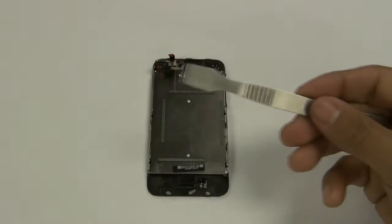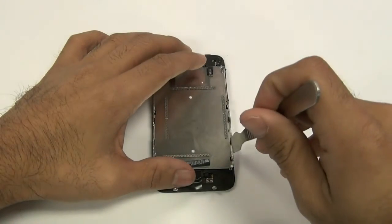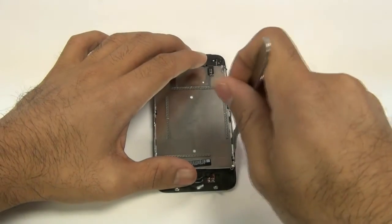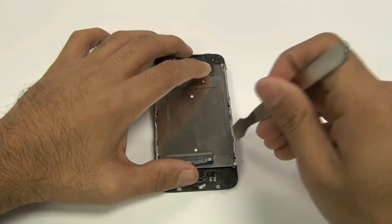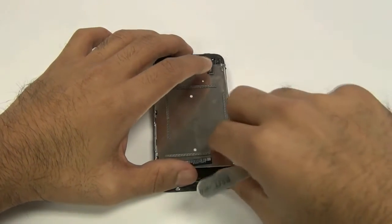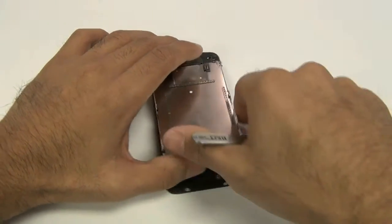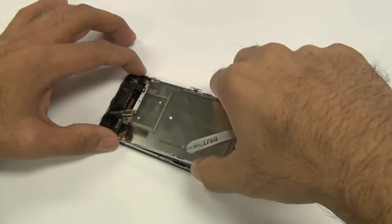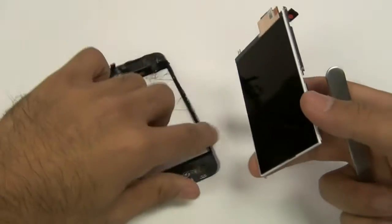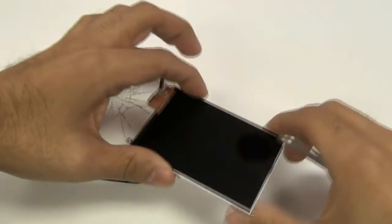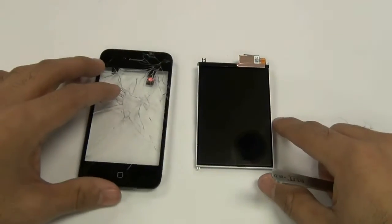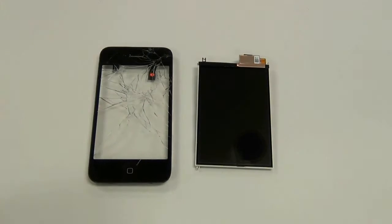Next, using a spudger or pry tool, place it between the two grommets of your LCD back plate and mid-frame to separate the LCD. If your LCD is not damaged, be very careful not to crack it during this process, as it can break easily. This LCD was already damaged, so we have a separate repair video for that disassembly.